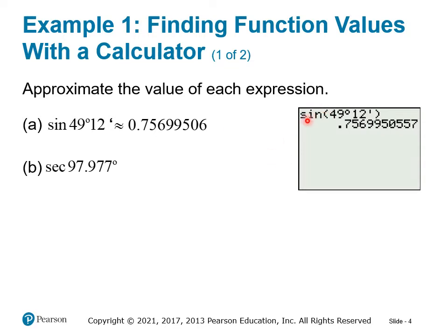Make sure your calculator is in degree mode by pressing the mode button — it's three or four buttons above the 7 key — and selecting degree mode. Once you've done that, enter the value and you get the approximation 0.7569950557, which rounds to ...506 at the end.